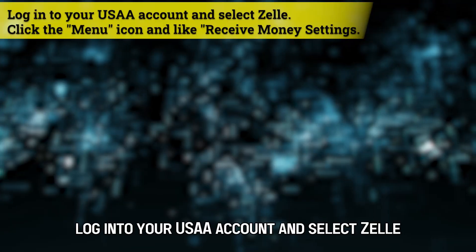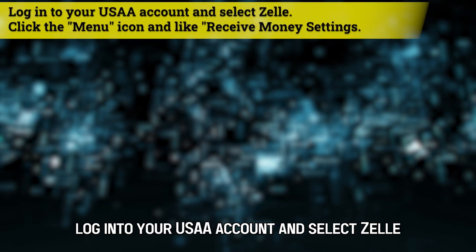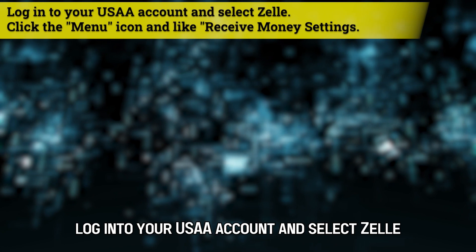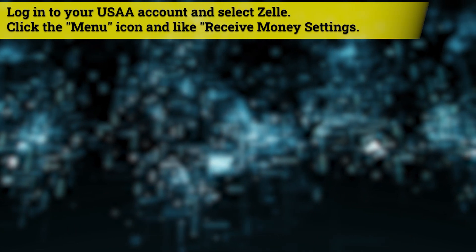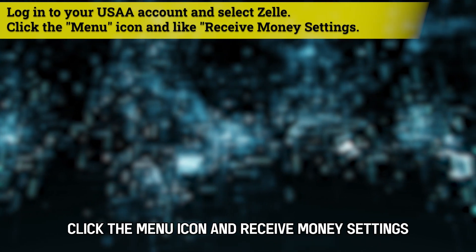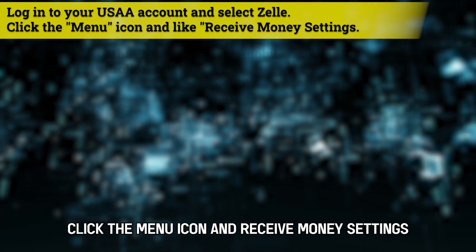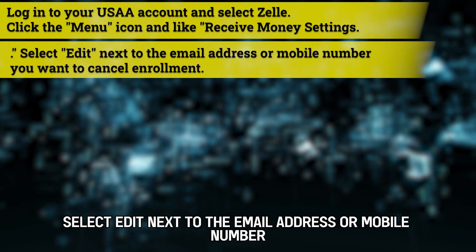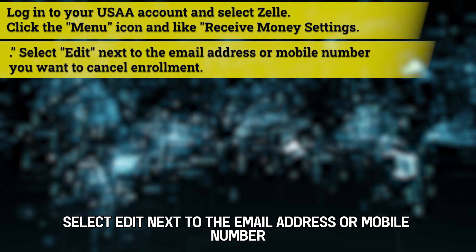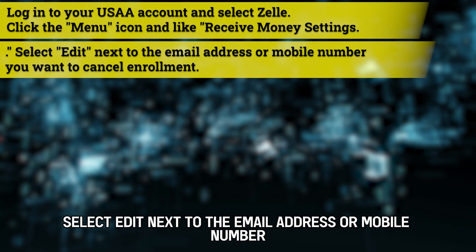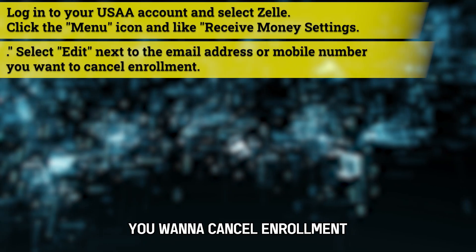How can one cancel Zelle enrollment? Log in to your USAA account and select Zelle. Click the menu icon and receive money settings. Select Edit next to the email address or mobile number you want to cancel enrollment.